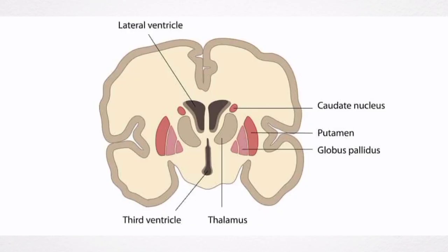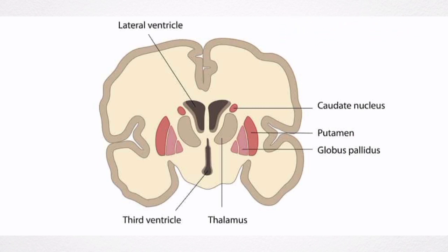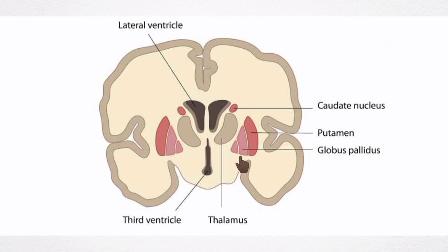The lenticular nucleus is situated lateral to the internal capsule. A vertical plate of white matter called the external medullary lamina divides the lenticular nucleus into two portions: the outer putamen and the inner globus pallidus.